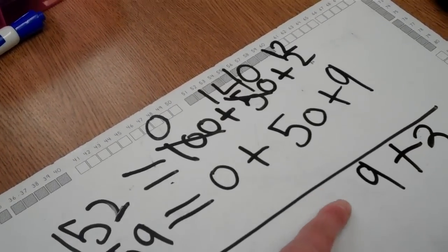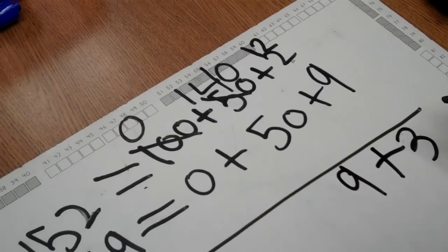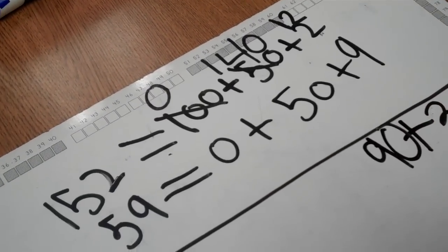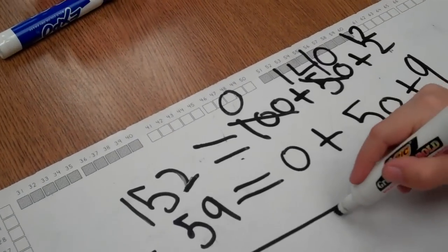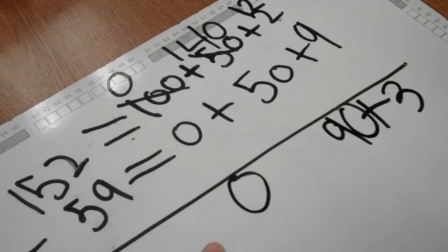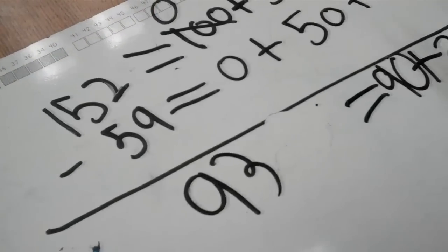We have 9 tens or 90. And now the student can see 0 minus 0 equals 0. And so they're able to put 90 plus 3 back together to know the answer for this subtraction.